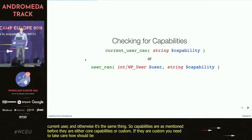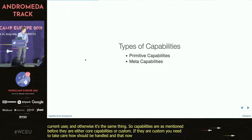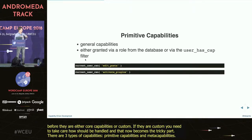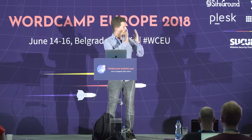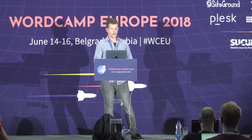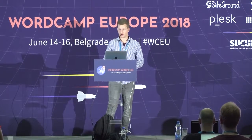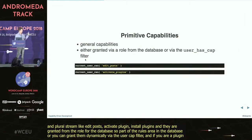There are two types of capabilities: primitive capabilities and meta capabilities. Primitive capabilities are the general capabilities, which usually consist of a verb and a plural string, like edit_posts, activate_plugins, install_plugins. They are either granted via a role from the database, or you can also grant them dynamically via the user_has_cap filter, which we will look at in a bit. If you are a plugin adding capabilities to an existing role, you should always use the user_has_cap filter.